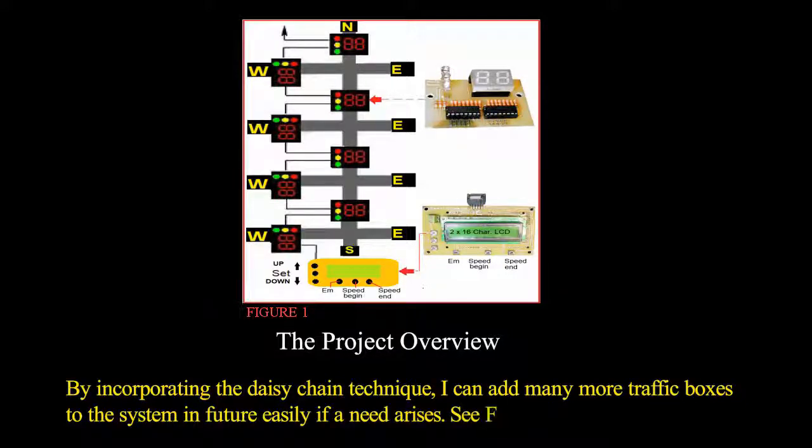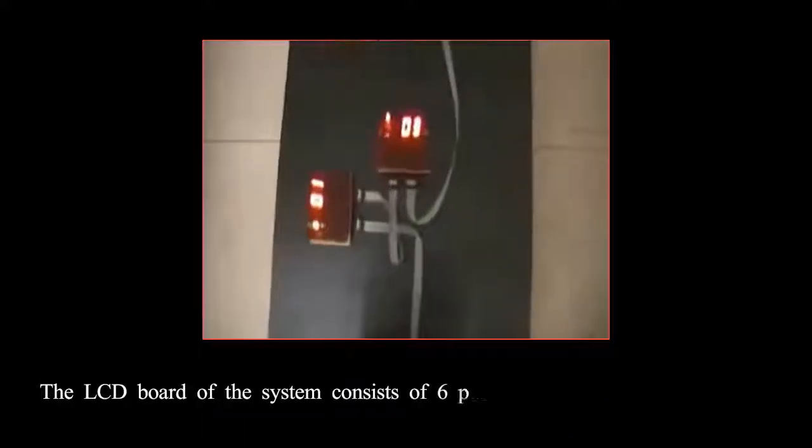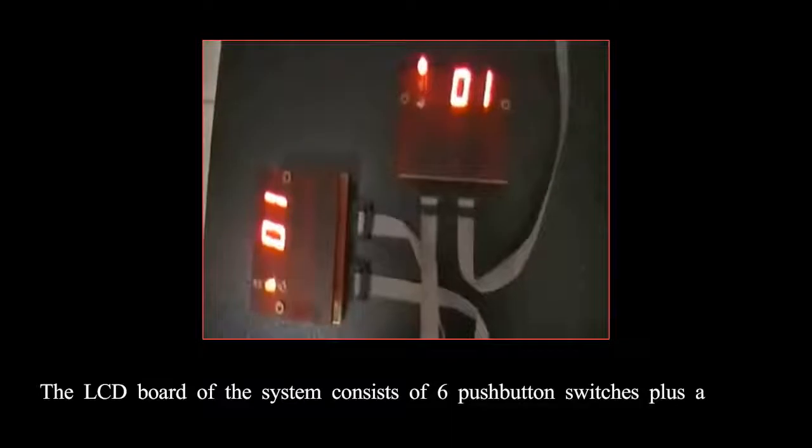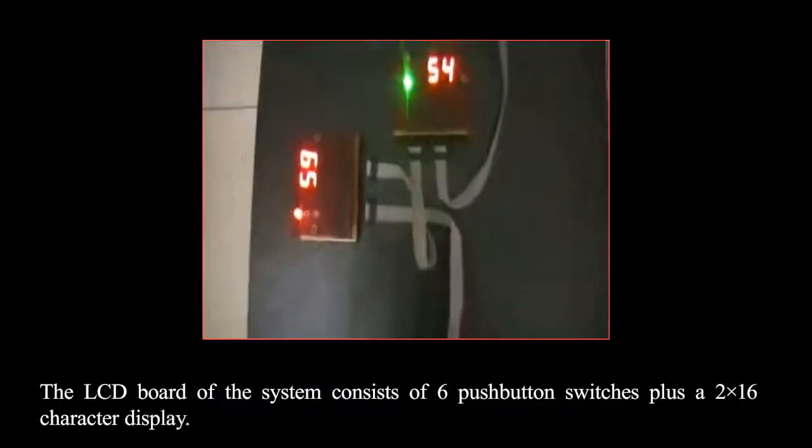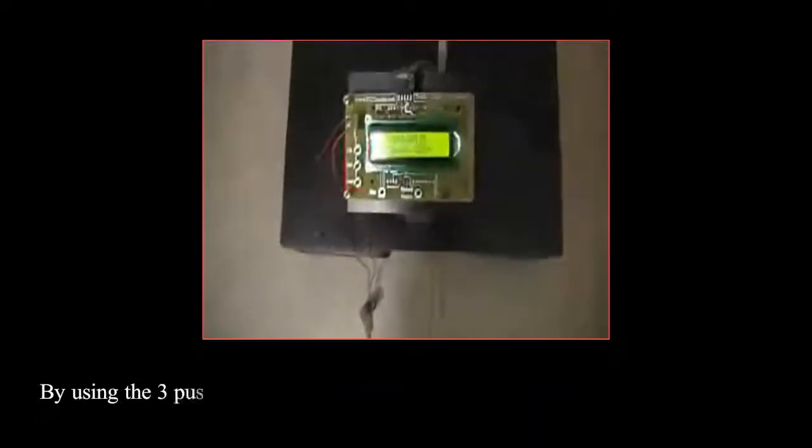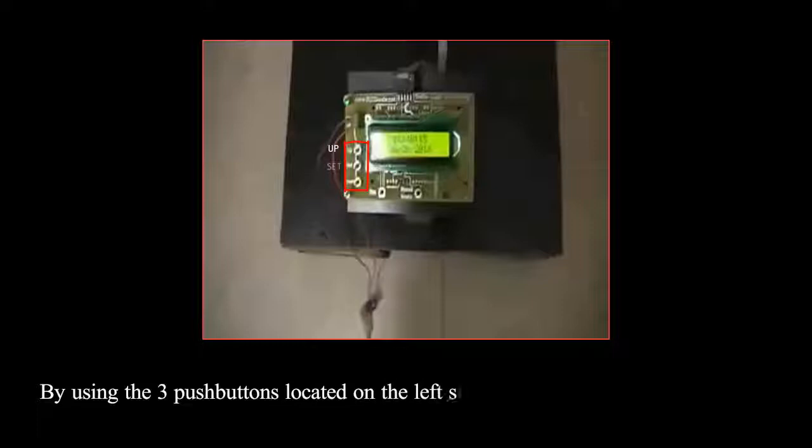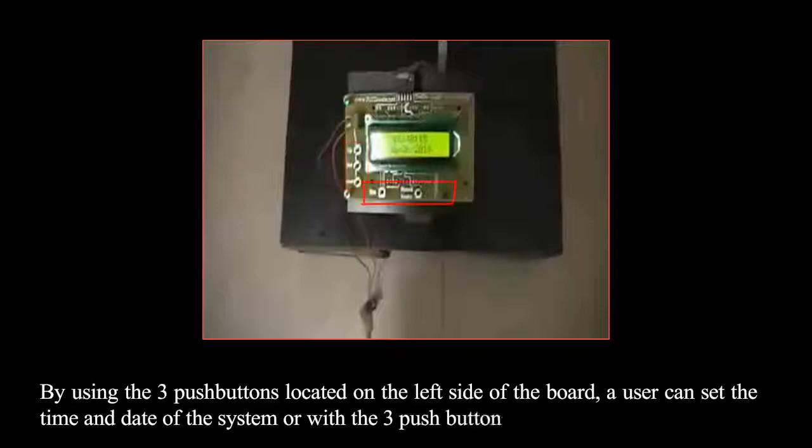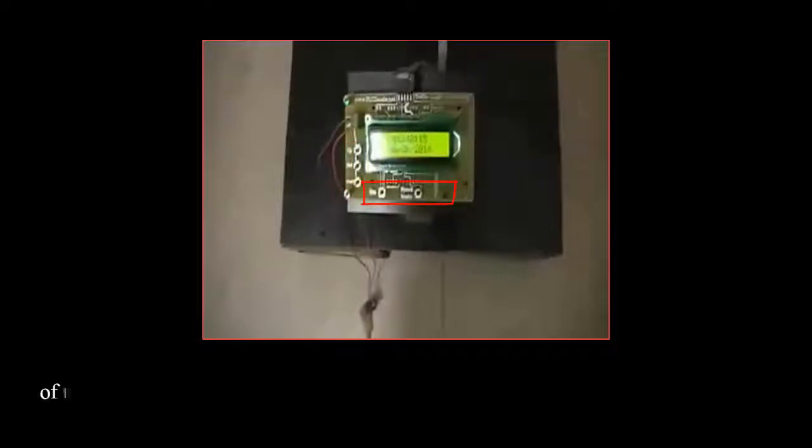The LCD board of the system consists of six push-button switches plus a two by 16 character display. By using the three push buttons located on the left side of the board, a user can set the time and date of the system, or with the three push buttons located at the bottom of the board, a user can put the system on emergency mode or calculate the speed of a car.